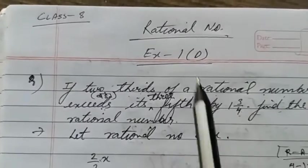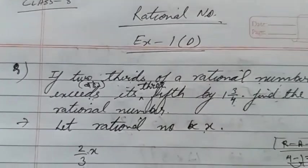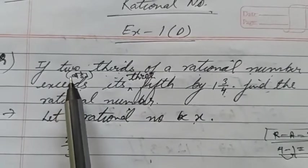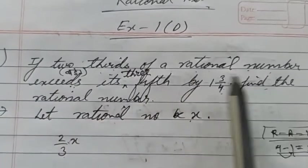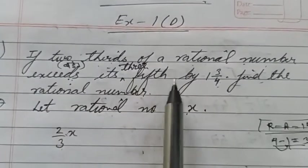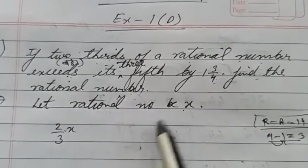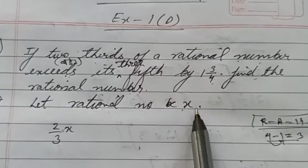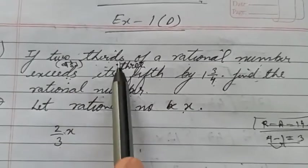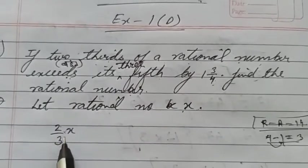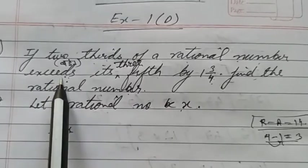Okay class 8, let's come to the first exercise on rational numbers. The question says: if two-thirds of a rational number exceeds its three-fifths by 1¾, find the rational number. First, let us take the rational number as x. So two upon three x, exceed means greater than.